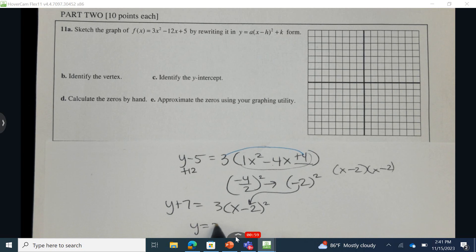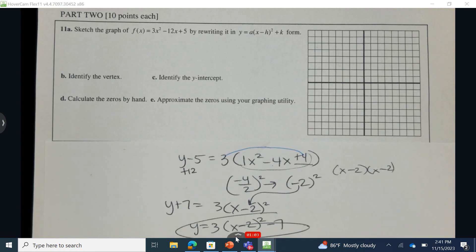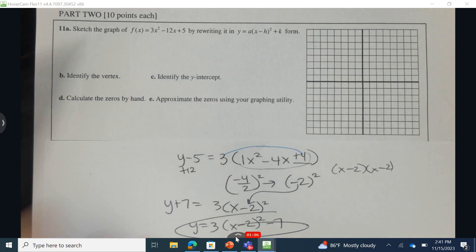Moving 7 back to the other side, I have 3 times the quantity x minus 2 squared, subtract 7. This is going to be equivalent to this.